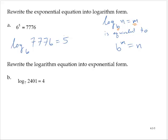Rewrite the logarithm equation into exponential form. The log base 7 of 2,401 equals 4. So if I forgot about the 4 for a moment, I would ask myself, what could I raise 7 to to get 2,401?